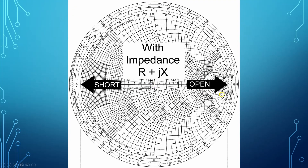Another important point: when working with impedance R plus JX, the right-hand side of the chart is the open. You can see that the values progress 1.2, 1.4, 1.6, 1.8, 2.0, getting bigger and bigger — so the further right we go, the higher the resistive portion, and this point is the open. Conversely, progressing 0.9, 0.8, 0.7, 0.6 all the way over to the very far left-hand side — that is the short. That's with impedance.